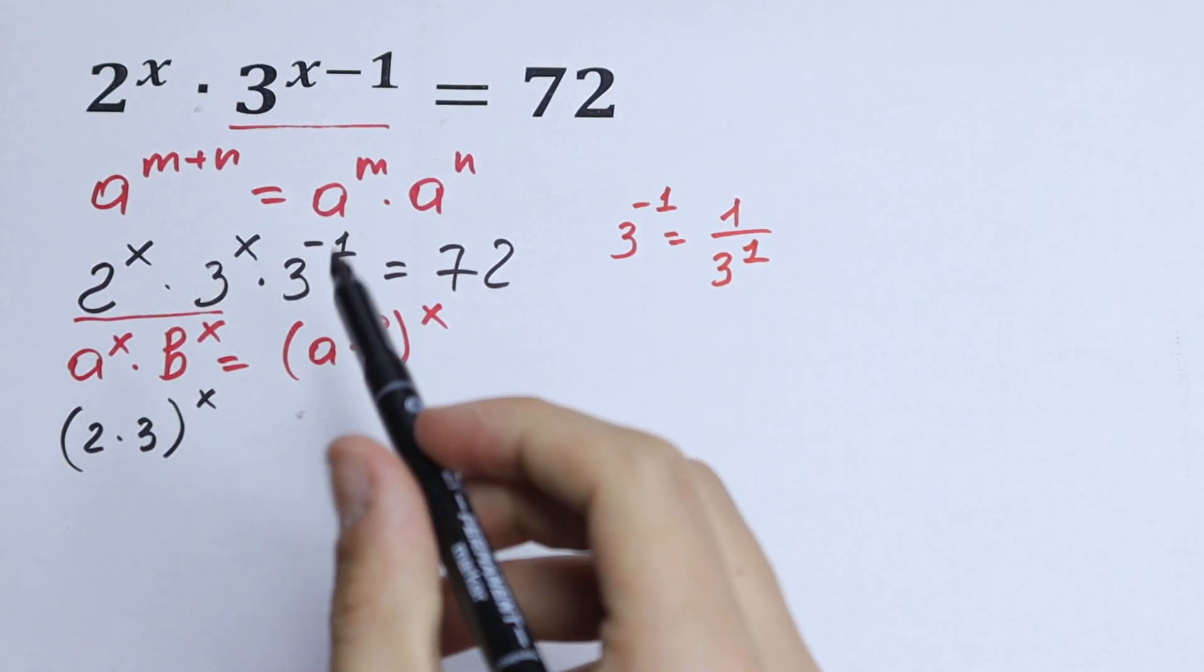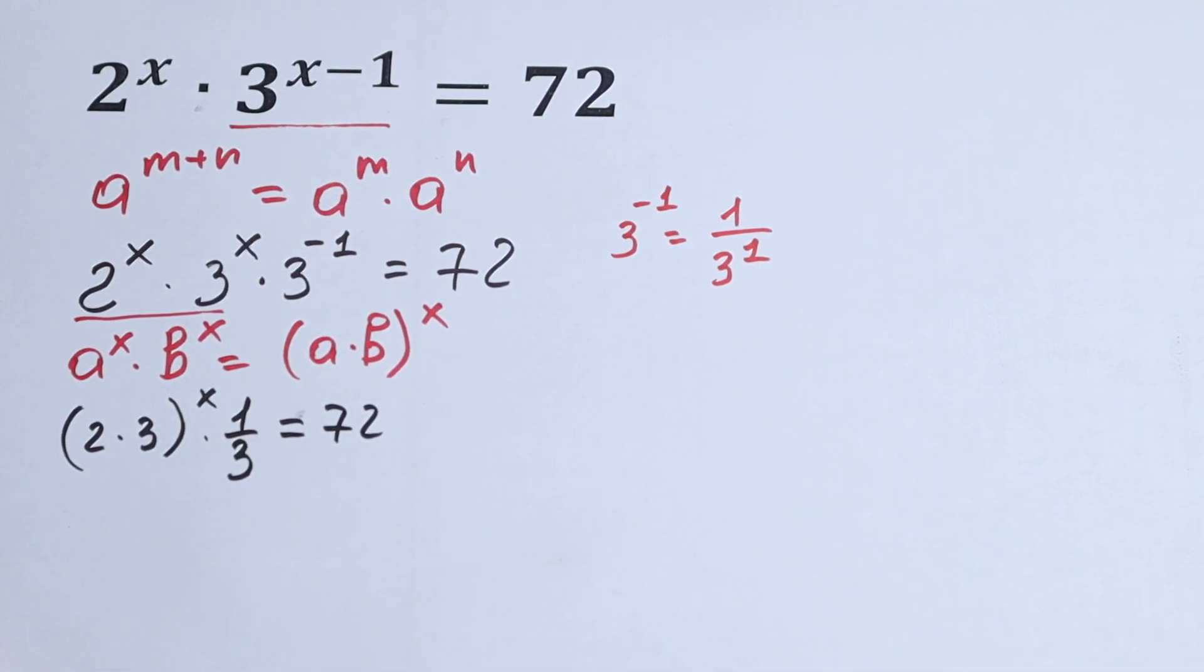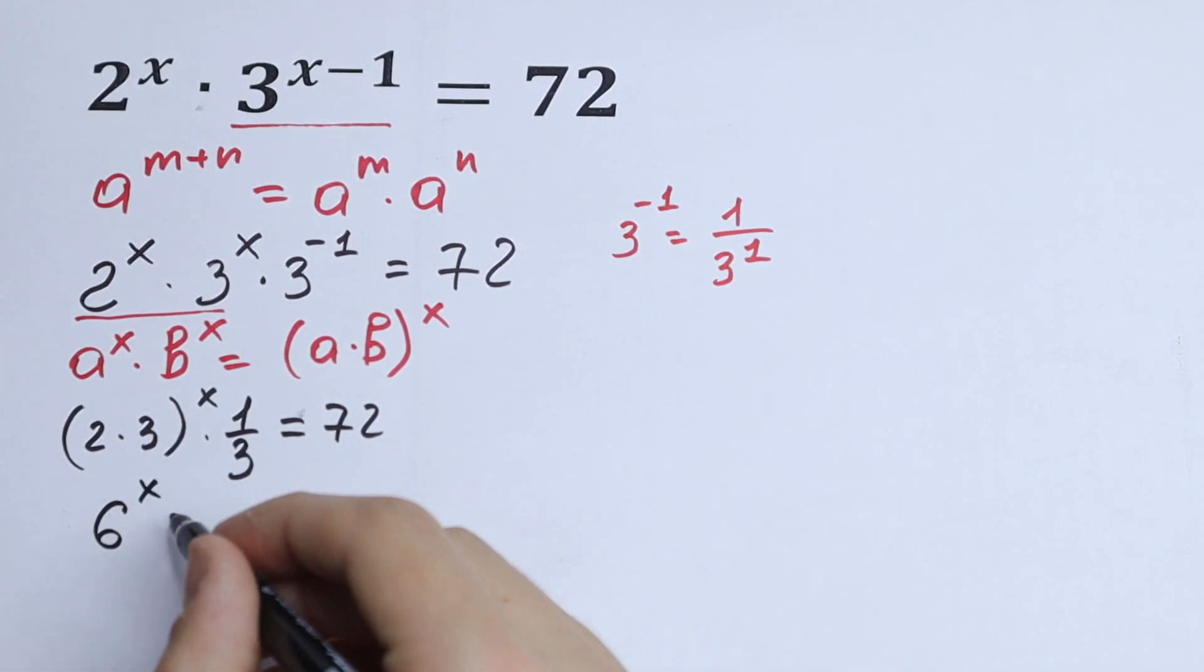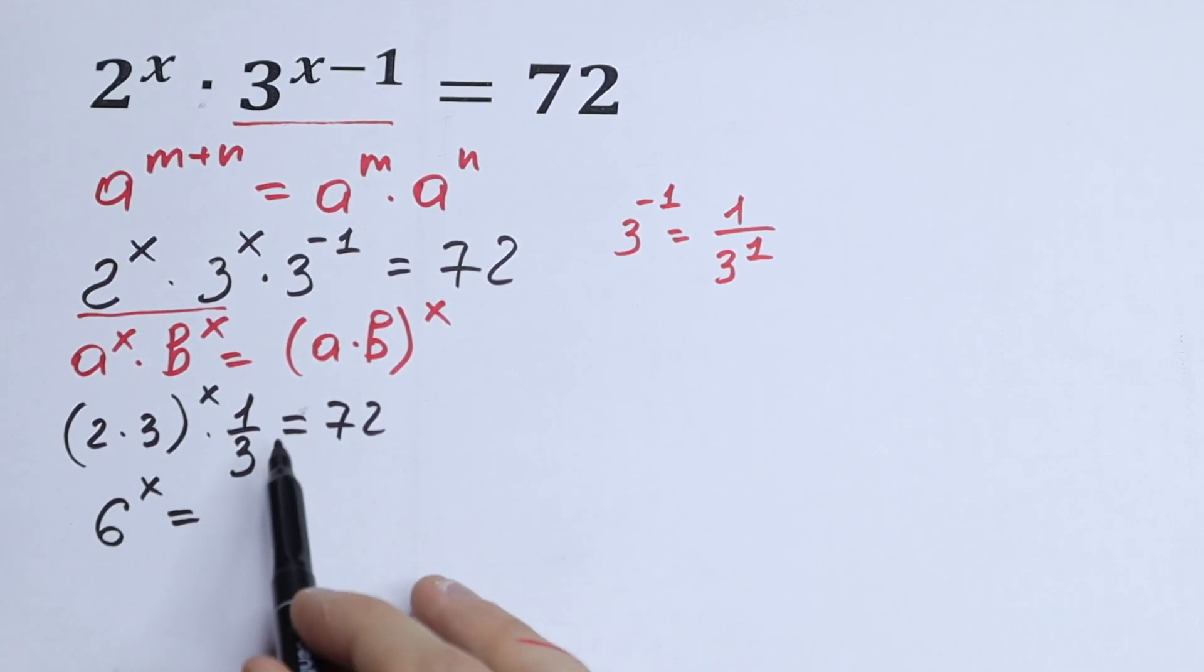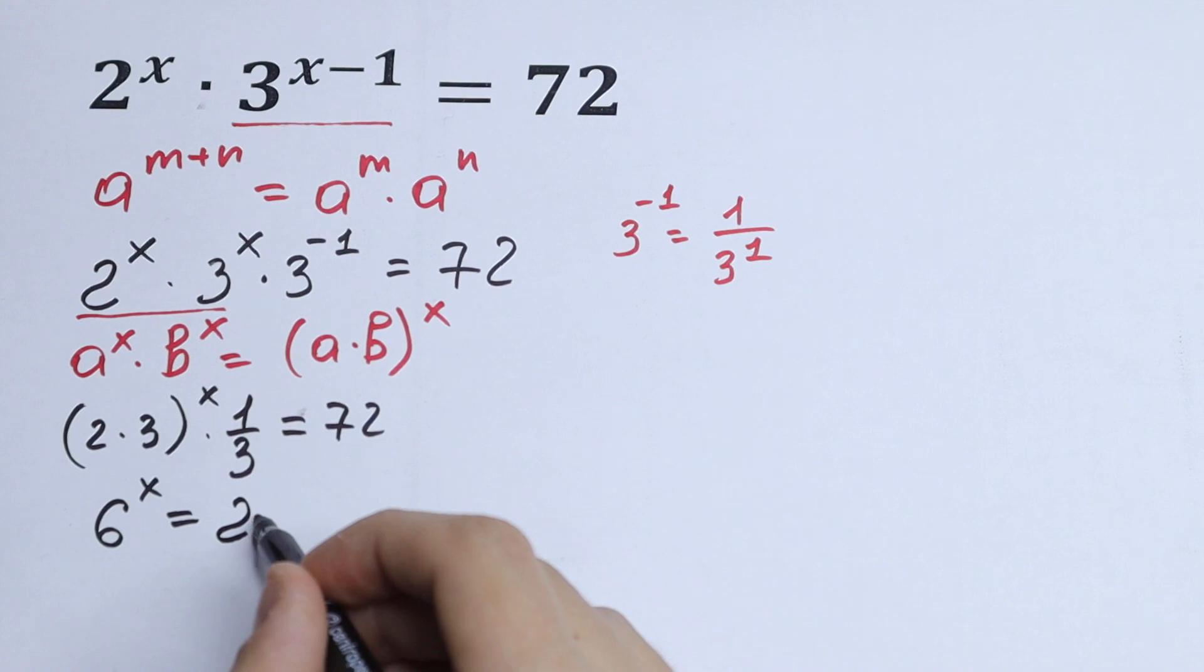Write this 1 over 3 right here, equal to 72. Just simplify this a little bit. 2 times 3 is 6 to the power x, equal to, and we multiply both sides by 3, and then we will have on the right 216.